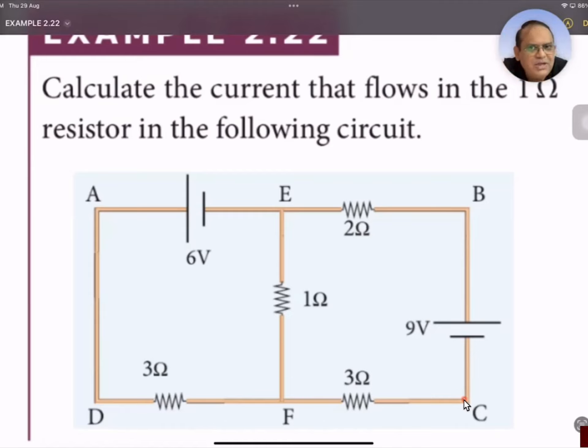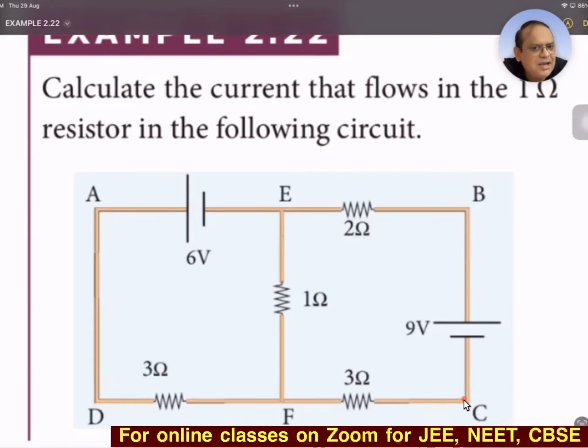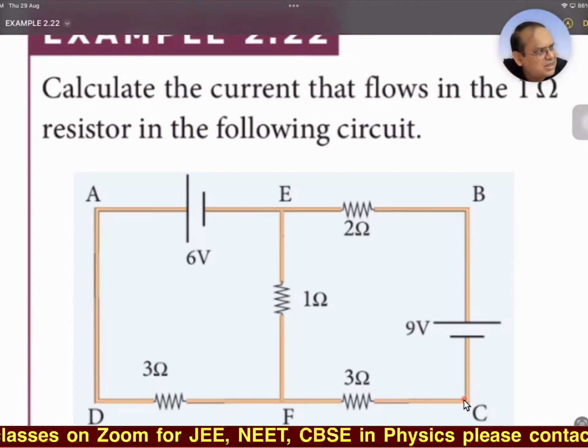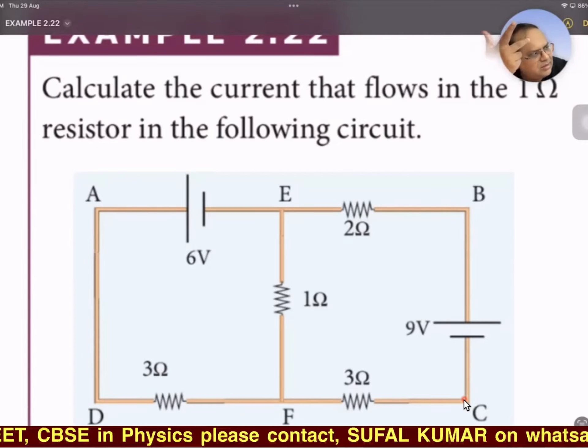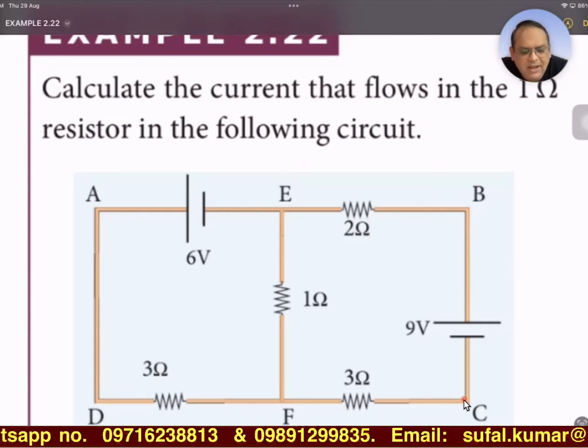Moreover we would be needing only two equations. Along with these two equations, junction rule is also there. So why choose the fourth one? But we are given this option; we may apply.